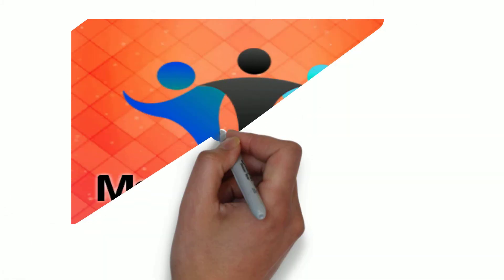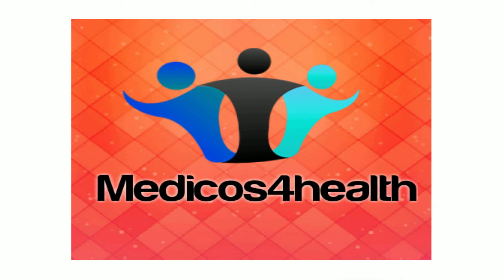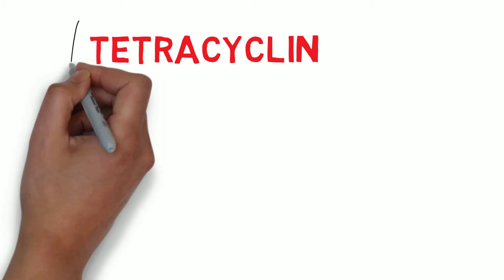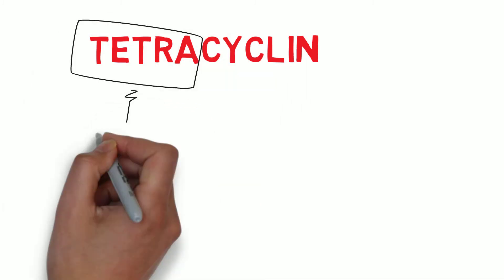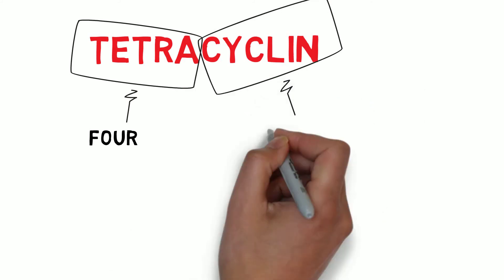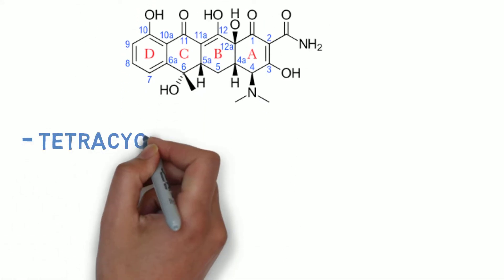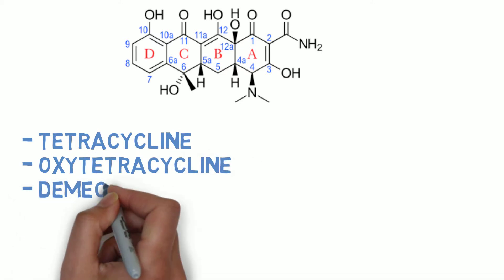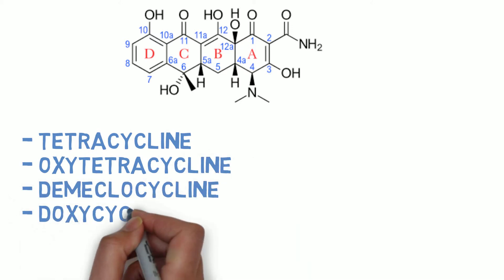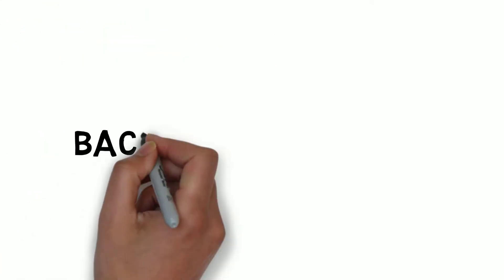Welcome to our channel Medicos for Health, where we deal with various medical topics. Today's topic is tetracycline. The term 'tetra' means four and 'cycline' means ring, so tetracycline is named because it has four rings in its chemical structure. It includes drugs such as tetracycline, oxytetracycline, demeclocycline, doxycycline, and minocycline.